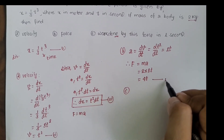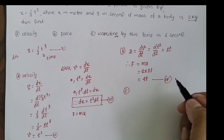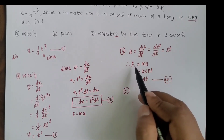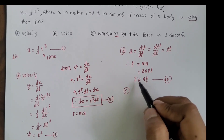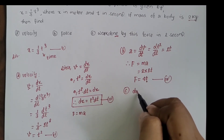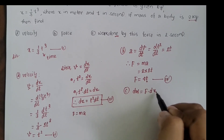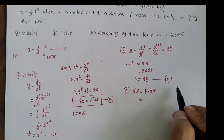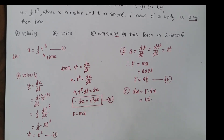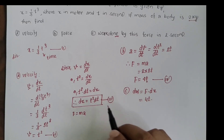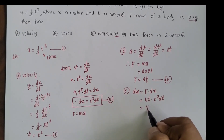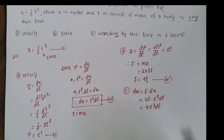For question part (c), calculate the work done by this force in 2 seconds, from 0 to 2 seconds. Since the force is variable — it changes with time — to find work done by a variable force, we start with the small work done: dW = F · dx = 4t × t² dt = 4t³ dt.